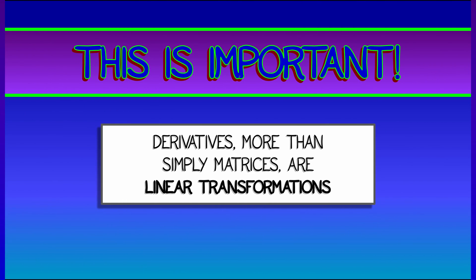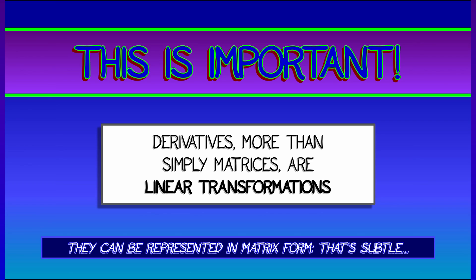Okay, now I get it. That example can be a little confusing, but this is important. Derivatives are more than simply matrices. They are, in fact, linear transformations. Now, you can often represent them in matrix form in terms of partial derivatives. That's great. That's useful. But that's a subtle point that it's not quite the same thing as saying that the derivative is a linear transformation.